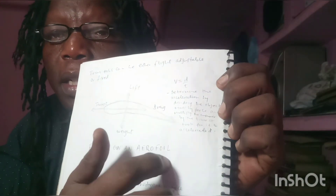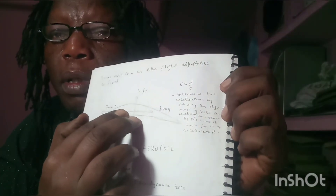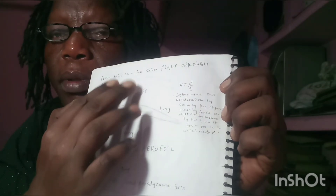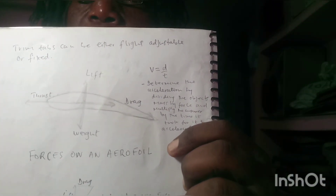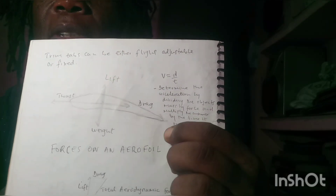Aircraft wings generate lift based on two principles: one from Isaac Newton and one from the Bernoulli principle. According to Sir Isaac Newton, for every action there is a reaction. So when air is pushed down — a downwash — we have an upwash on the other side, and this is how the airfoil or wing is pushed up.